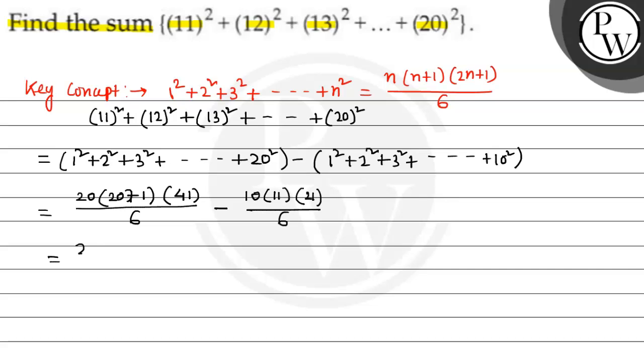So, now calculate 20 multiplied with 21 multiplied with 41 divided by 6 minus 10 multiplied with 11 multiplied with 21 divided by 6.